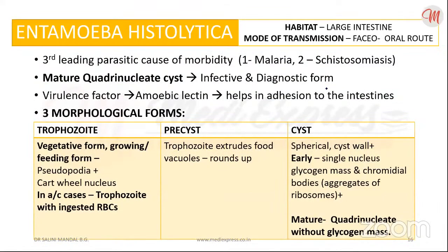Entamoeba histolytica is a very important parasite. It is worldwide in distribution, but more common in the tropical and subtropical countries.